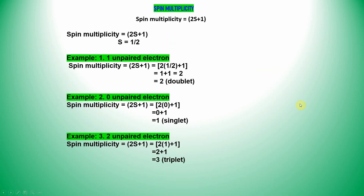This is the spin multiplicity calculation formula: 2S plus 1. S means number of spin electrons. If you have only one unpaired electron, S equals one-half. If you have 2 unpaired electrons, S equals 1. If you have 3 unpaired electrons, S equals three-halves. If you have 4 unpaired electrons, S equals 2. Likewise, substitute in this formula to get your spin multiplicity value.